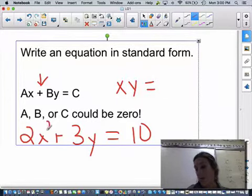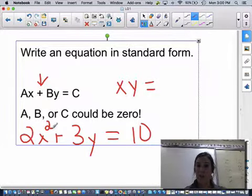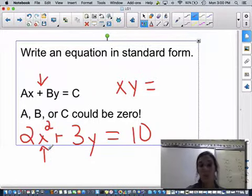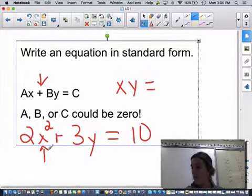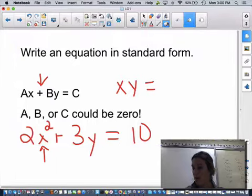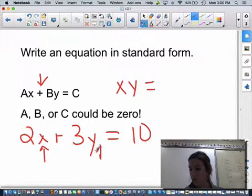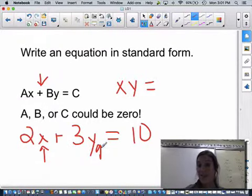Now, if I add an exponent here, it is no longer a linear function. So for it to be a linear function, we have to have our X value to the first power. Let's just delete that off. And our Y value has to be to the first power.